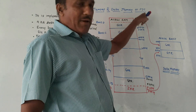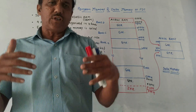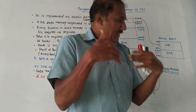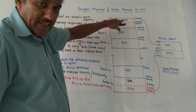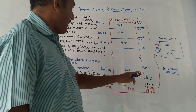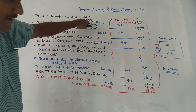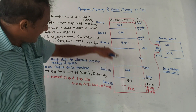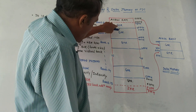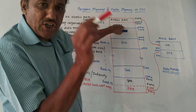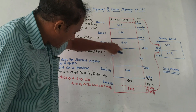The next part is data memory organization. This diagram indicates the organization of data memory, which uses SRAM — Static Random Access Memory. There are 16 banks: bank 0, bank 1, bank 2, up to bank 15. The abbreviation GPR refers to general purpose registers; data memory is a group of such registers.